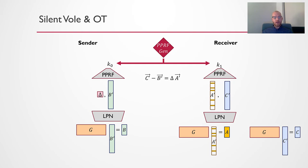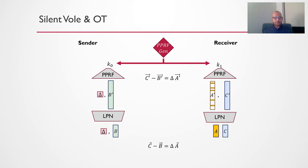So the next step is that we'll run LPN to bootstrap this sparse correlation into the standard VOL correlation. We'll talk more about LPN later, but suffice it to say now, what LPN consists of is multiplying a large random matrix G from the left by the vector, and then this gets you the final output. Critically, LPN says that even though this A' vector is sparse, the final A vector is in fact uniformly random. This concludes how our VOL protocol, or the VOL protocol that we use works.